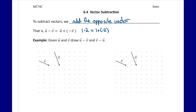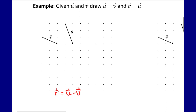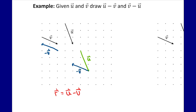Geometrically, if I'm given two vectors v and u — similar to our previous lesson — but now I want to subtract them. For the first one, I want the resultant to equal vector u minus vector v. So I'm going to start by drawing vector u, and then I need to add the opposite of vector v. The opposite of vector v has the same magnitude but goes in the opposite direction. I can then attach it tip to tail, and draw my resultant.